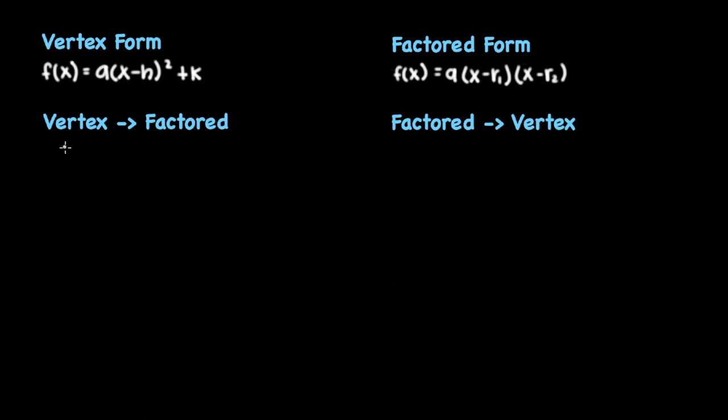Now to convert from vertex form to factored form, you must convert to standard form and then to factored form. Let's take a look at the example f(x) = 2(x + 1)² - 8.